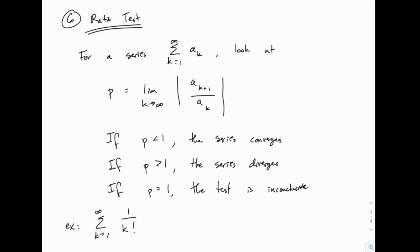If that limit is less than one, it turns out that's enough to prove that this series converges, because it's enough to prove that the terms are getting smaller fast enough if that ratio of subsequent terms has a limit less than one.